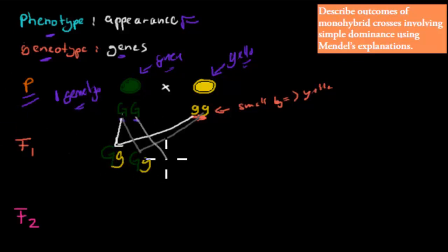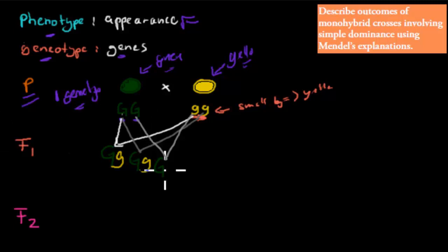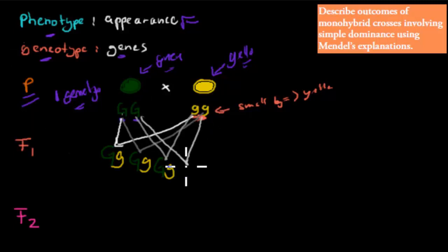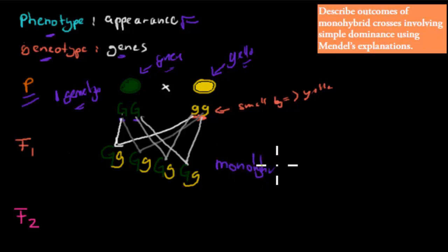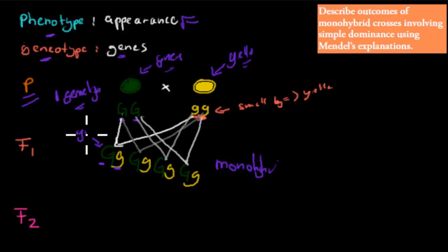Going through all the different possibilities, they all produce the same result: every offspring has one big G and one small g - they're all monohybrids. Their genotype is capital G, small g. But their phenotype - what they look like - is green, because the big G is dominant. So all F1 plants are green even though they carry the recessive small g, which is hidden.